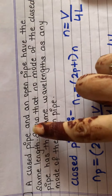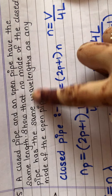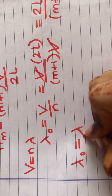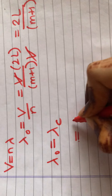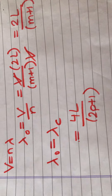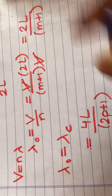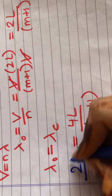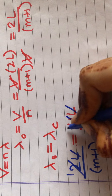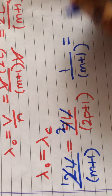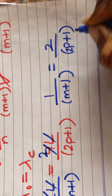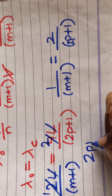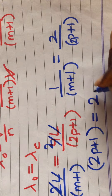According to the condition, let's assume that the wavelength of the open pipe equals the wavelength of the closed pipe. So: 2L/(M+1) = 4L/(2P+1). Cancelling L and simplifying, 1/(M+1) = 2/(2P+1). Cross-multiplying: 2P+1 = 2(M+1).